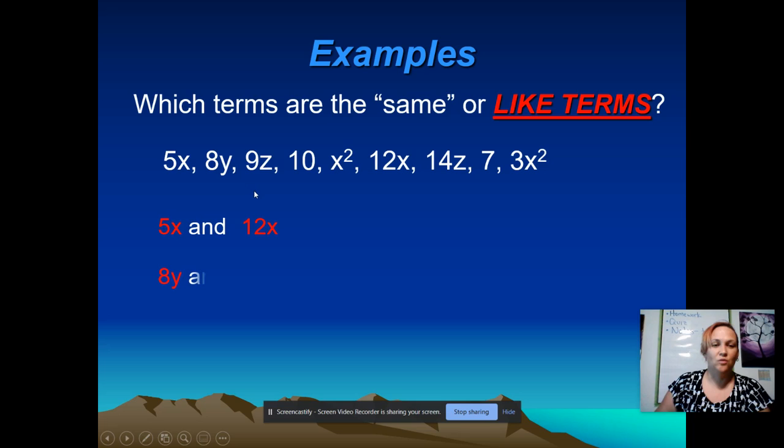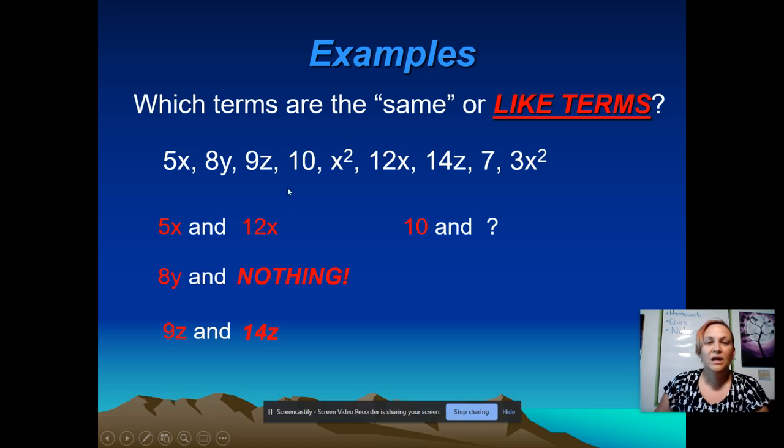The next number in my list is the 8y. So now we just got to scan through and try to find something else that has a y. I'm looking at all these terms. Nothing else has a y. Now it's okay if something doesn't have a like term. That just means you're not going to add it together with something else. You're going to keep it the same for the problem. Next in my list, I have a 9z. So I would need to find something with a z. That would be this 14z over here. Next, I have the number 10. Now again, 10 is called a constant since it doesn't have a variable with it. And it can be combined together with another constant. So another number that has no variables with it, like this number 7.